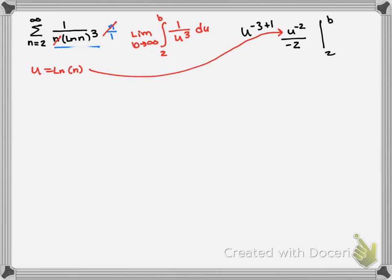So as I rewrite this, we have negative 1 over 2 ln of n all to the second power in the denominator from 2 to b, and the limit as b approaches infinity.